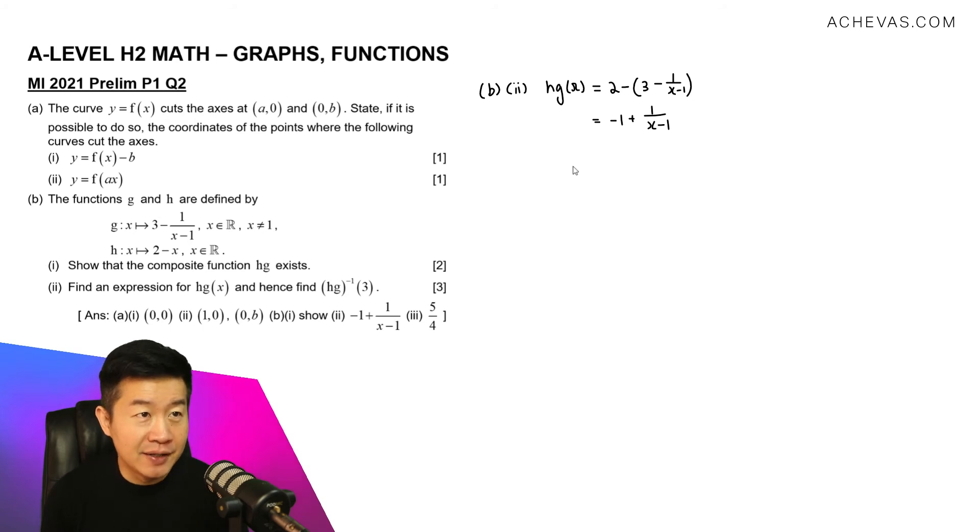We are supposed to hence find hg inverse, hg as a function inverse of 3. So the question says, hence, find hg inverse of 3, which means that we need to make use of what we have previously. But this is an inverse. So in order for me to make use of the previous part, I'm going to let this be equal to, let's say, k. So my aim is to find k.